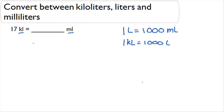First we can go from kiloliters to liters. So let's take our 17 kiloliters and know that each one of them is worth 1,000 liters. So we're going to multiply our 17 by 1,000, and we're going to get 17,000 liters.